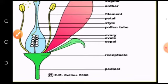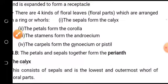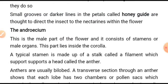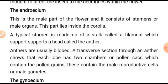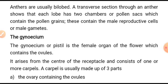The androecium consists of anthers and filaments. A typical stamen is made up of a stalk called the filament that supports a head called the anther. Anthers are usually bilobed; a transverse section through an anther shows that each lobe has two chambers or pollen sacs which contain the pollen grains — the male reproductive cells or male gametes.